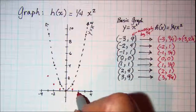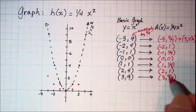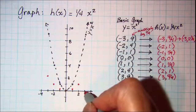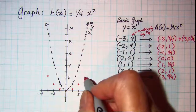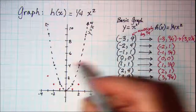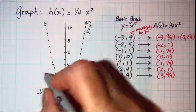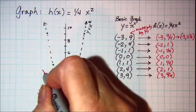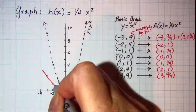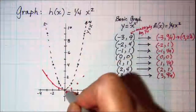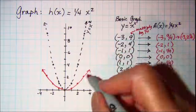So the basic graph is now compressed or shrunk, with points plotted at coordinates such as 2 and 3 fourths, and 2 and 1 fourth. The basic graph is now compressed or shrunk to look like this.